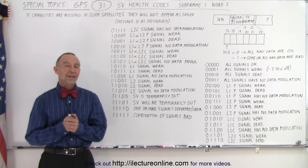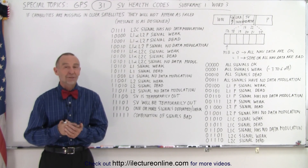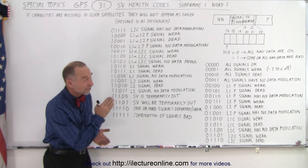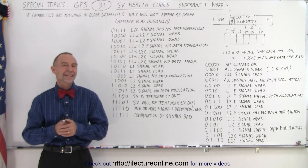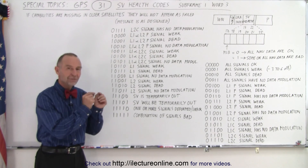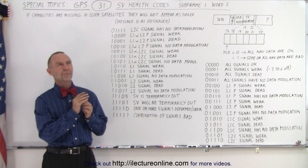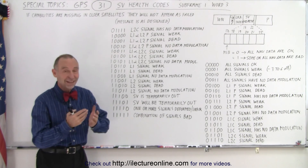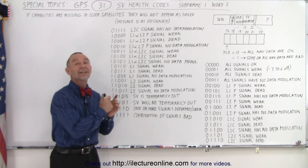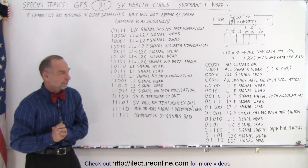Welcome to ElectronLine. The next set of information in subframe 1, word 3, in bits 17 through 22, is the SV Health. The information is only of that particular SV that it's coming from, not of any of the other SVs in the system.